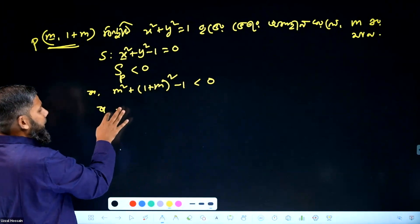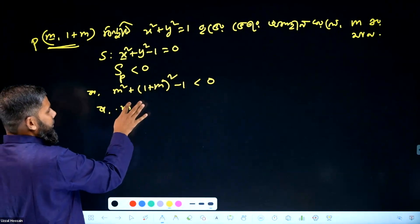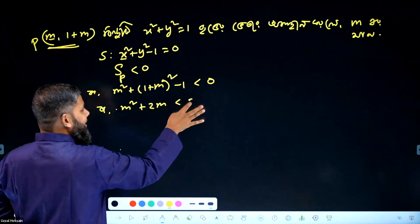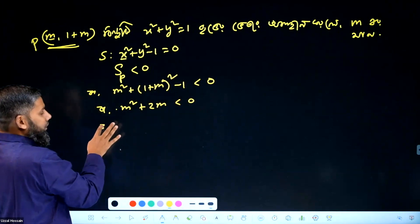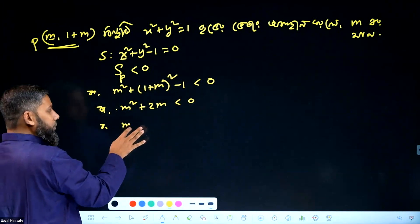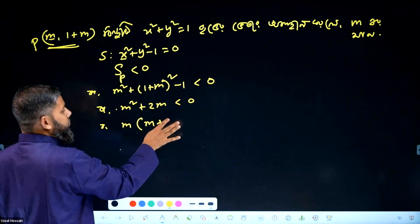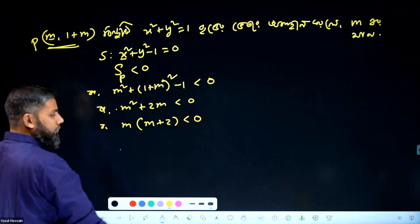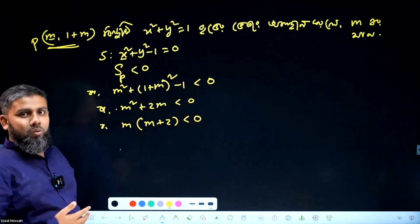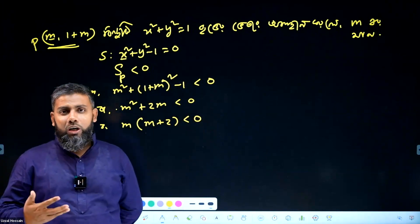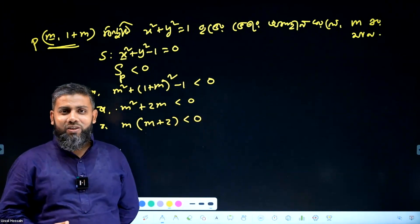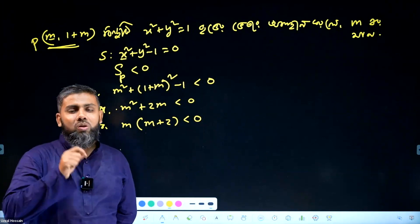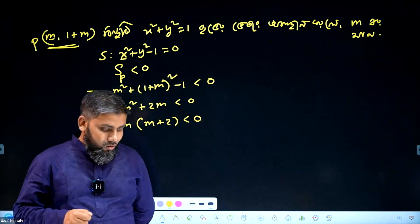Eta less than 0. So we get m square plus 2m less than 0. Tara maane, if we factor: m into m plus 2 less than 0. The inequality solution — m less than 0, m less than minus 2. But that is not the final answer; we solve the inequality properly.